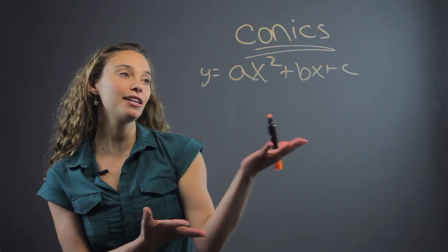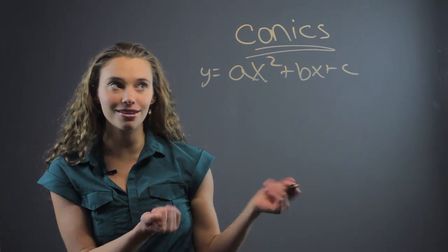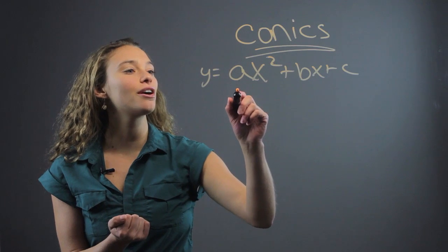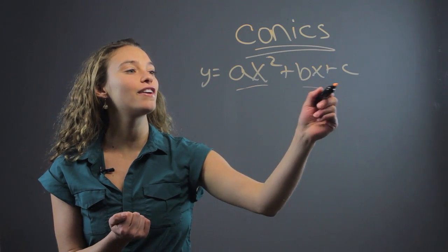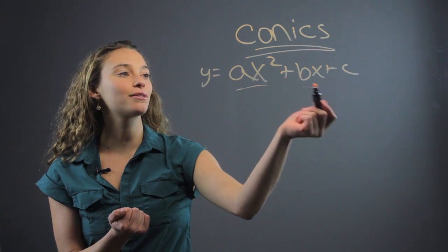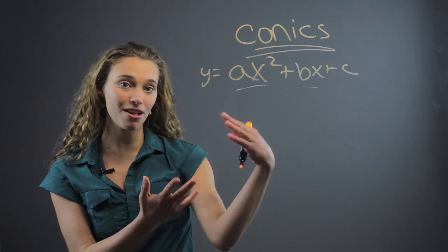So, one way to solve that is that you can graph it, and you can see the shape, but you can also see what kind of function it is. If it's ax squared plus bx plus c, this is an example of a parabola.